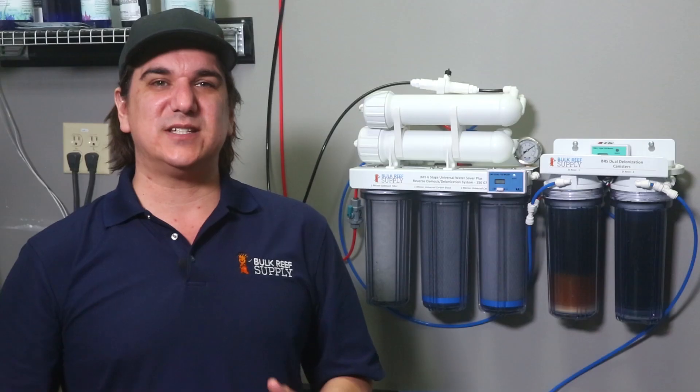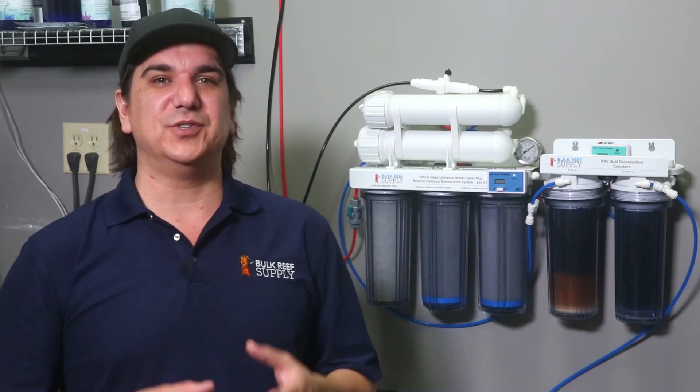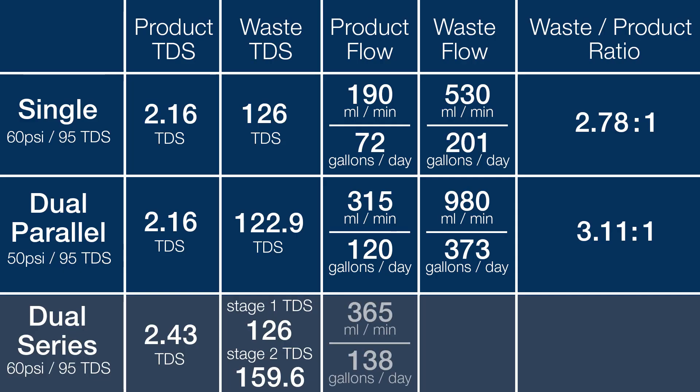So overall, there is a slight increase in TDS, which means slightly higher DI resin consumption, but I think the other savings related to the water saver configuration will significantly outweigh that. As relates to flow, we achieved 365 milliliters a minute of product water, which is 138 gallons a day, just shy of the expected 150. However, the waste was just 535 milliliters a minute, or 203 gallons a day, which is a waste to product water ratio of 1.47 to 1, just about half the waste from a single membrane. I would call this goal achieved.